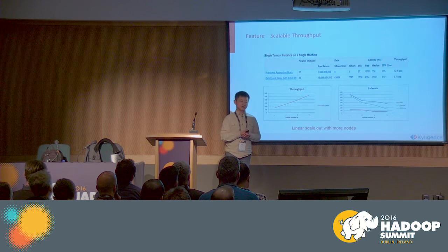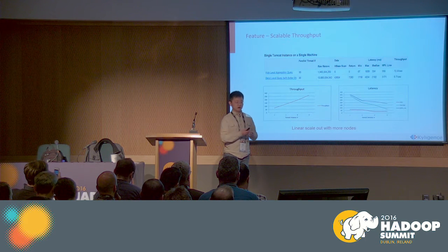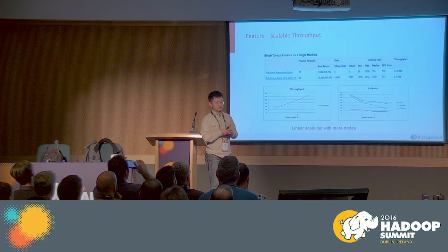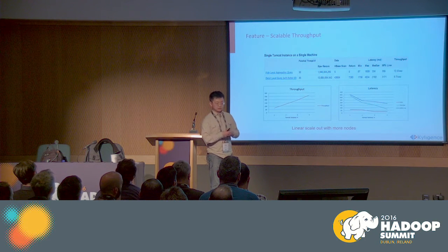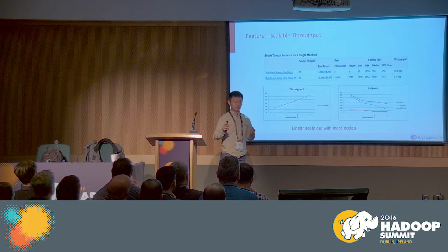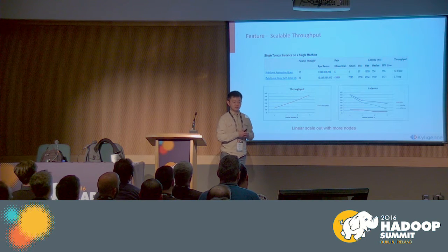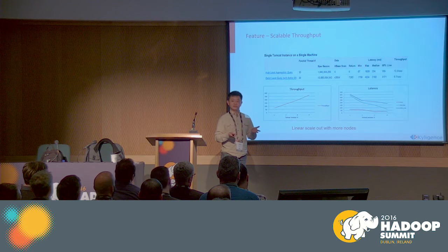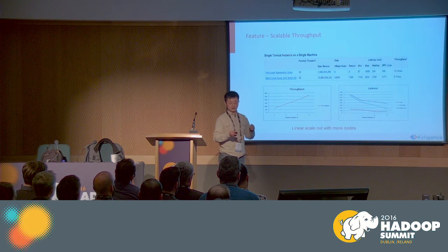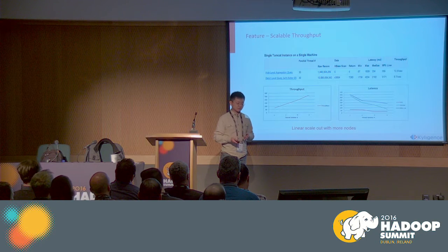The throughput is good because online processing is kept minimal, thanks to the offline preprocessing. So Kylin requires very little CPU and memory to handle a query. We did simple tests where we ran a full query service instance on a moderate machine, and the scalability of throughput is linear. By design, the bottleneck of Kylin is usually on the HBase side — on storage.